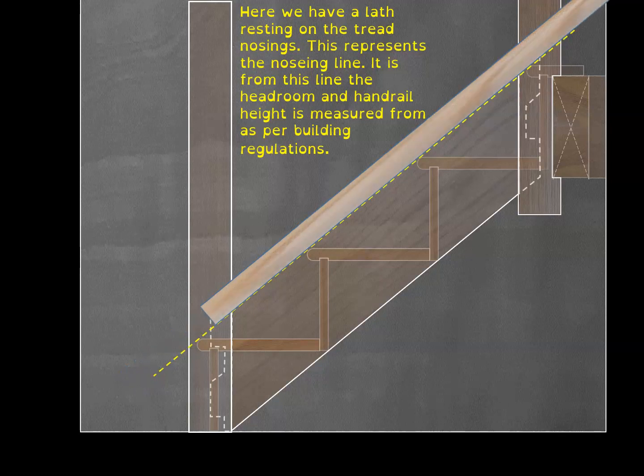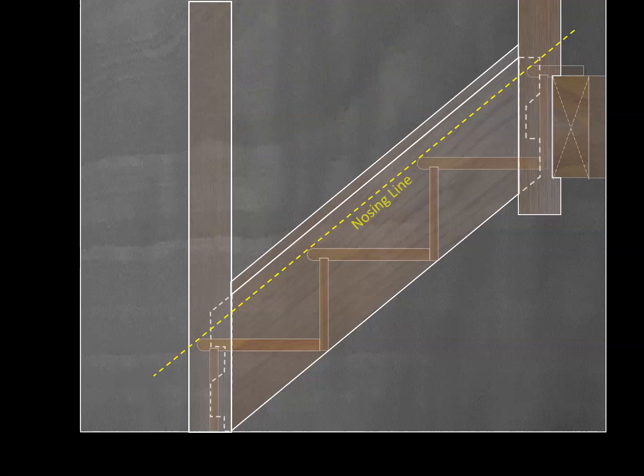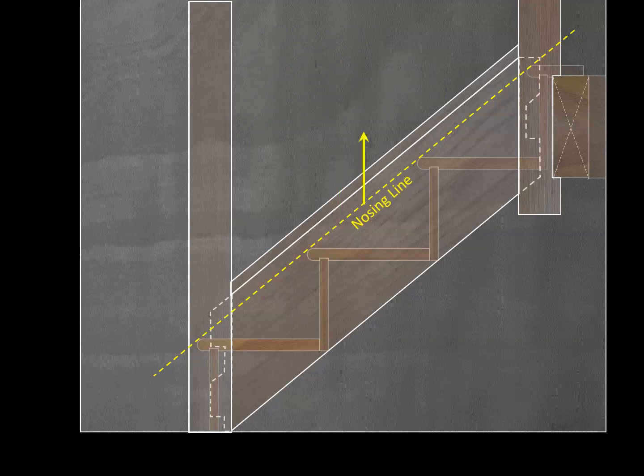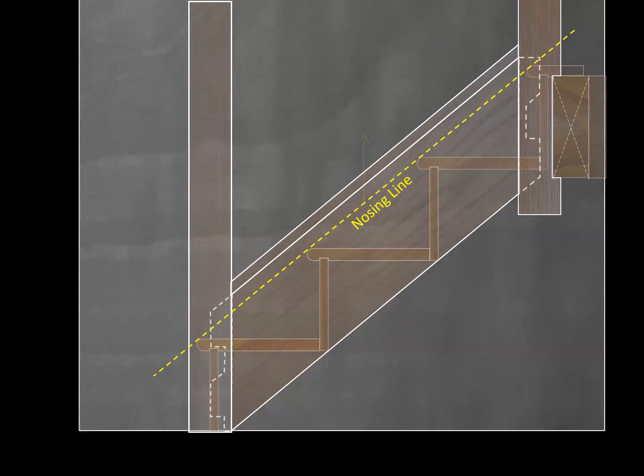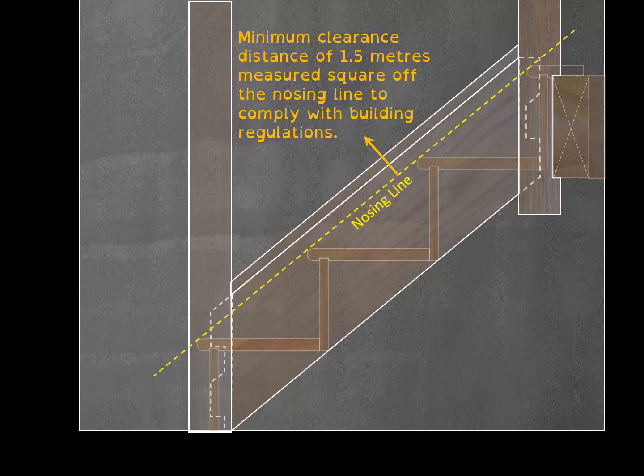Regarding regulations, there's a part of stairs called a nosing line. If you rest a lath on top resting on the nosings of each step and measure up from that, the minimum you must have to the top of your handrail is 900 millimeters. For headroom you need a minimum of 2 meters measured vertically off that nosing line, and also measured square off that nosing line you must have a distance of 1.5 meters. Bear those regulations in mind when designing or laying out your stairs.